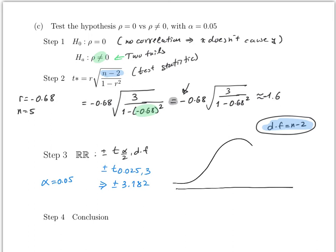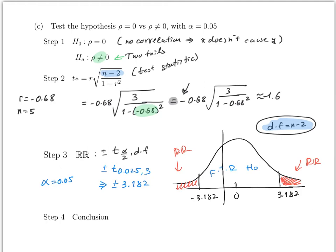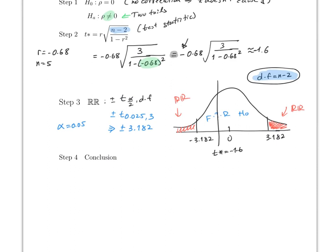Draw the rejection region with critical values −3.182 and +3.182. Values beyond these are rejected; values between them fail to reject H₀. Since t* = −1.6 falls between the critical values, the conclusion is: fail to reject H₀. There is no evidence to reject that ρ = 0 — meaning no correlation.